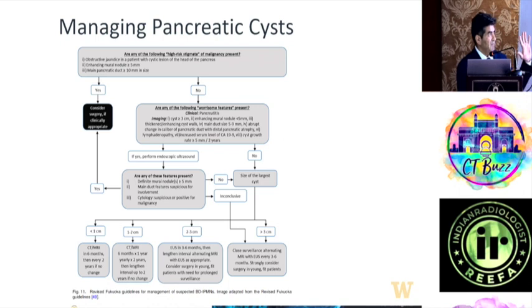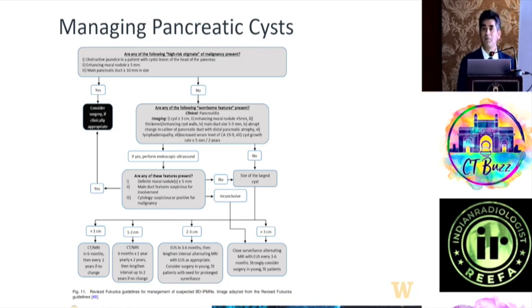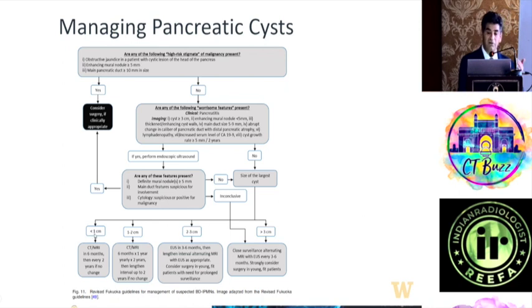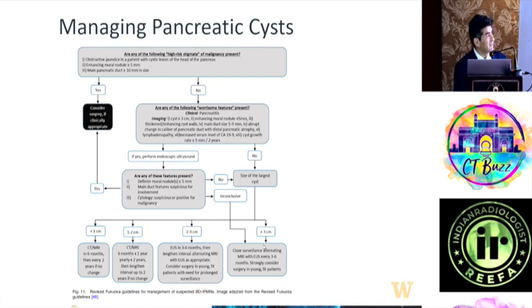Here is the crux of managing pancreatic cystic lesions. First: symptoms — any symptoms attributable to the cyst require action, at minimum aspiration. Second: cyst morphology — if the morphology has the features described, intervention (resection or biopsy) is likely. Third: pancreatic duct changes. If absent, and it's an incidental lesion less than 3 cm, we monitor. For lesions less than 1 cm, risk is lowest and follow-up can be at one to two year intervals, up to five years if stable.